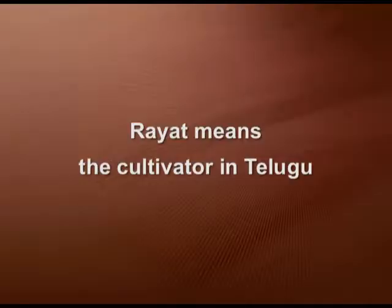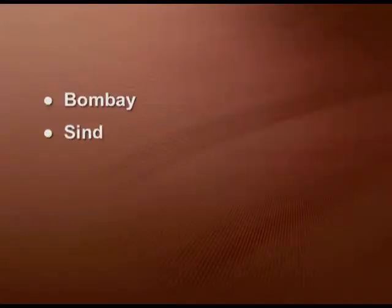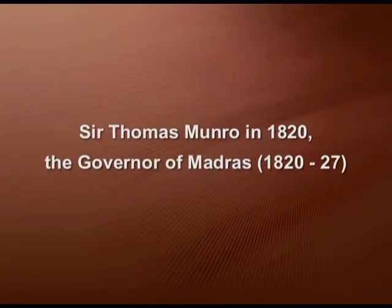The second land tenure system is the Rayatwari system. Rayat means the cultivator in Telugu language. The British started individual peasant proprietorship known as the Rayatwari system in parts of Bombay, Sindh and Madras. This was introduced by Sir Thomas Munro in 1820, who was the Governor of Madras from 1820 to 1827. Under the Rayatwari system, the actual cultivator was transformed into the owner of the land being cultivated, and the cultivator rather than the zamindar was responsible for paying taxes. The colonial government dealt directly with the farmers, so these areas became relatively more productive and prosperous.